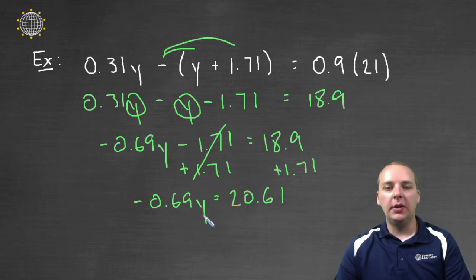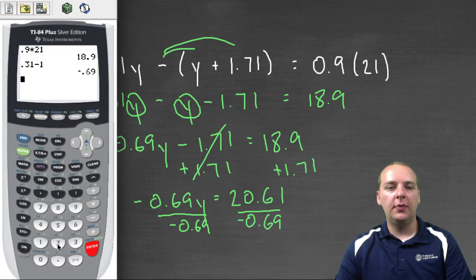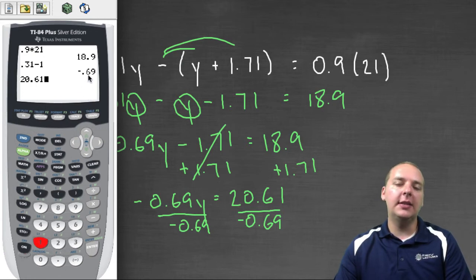And I'll do that in the calculator as well. So I'll have 20.61, and if you have a, in this case I could just type -0.69, but if you have a really long decimal, a nice shortcut that you could use is you can click divide by second answer.